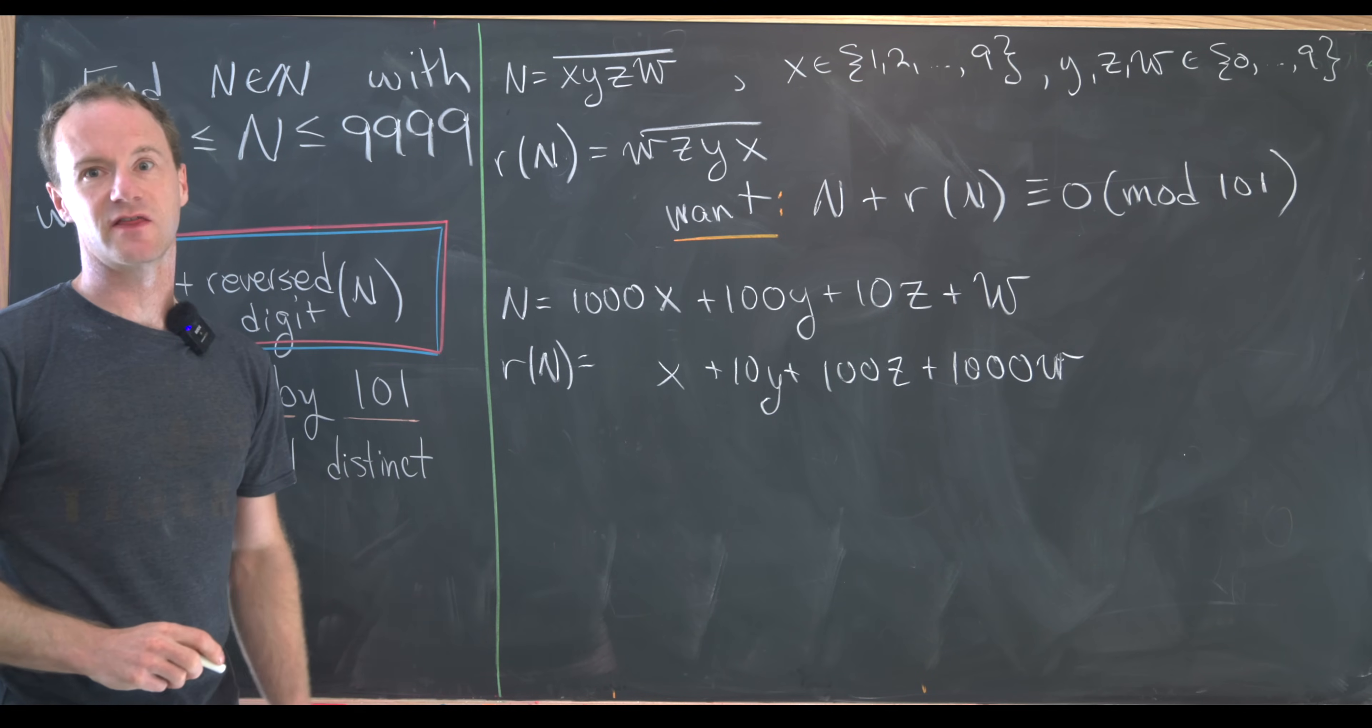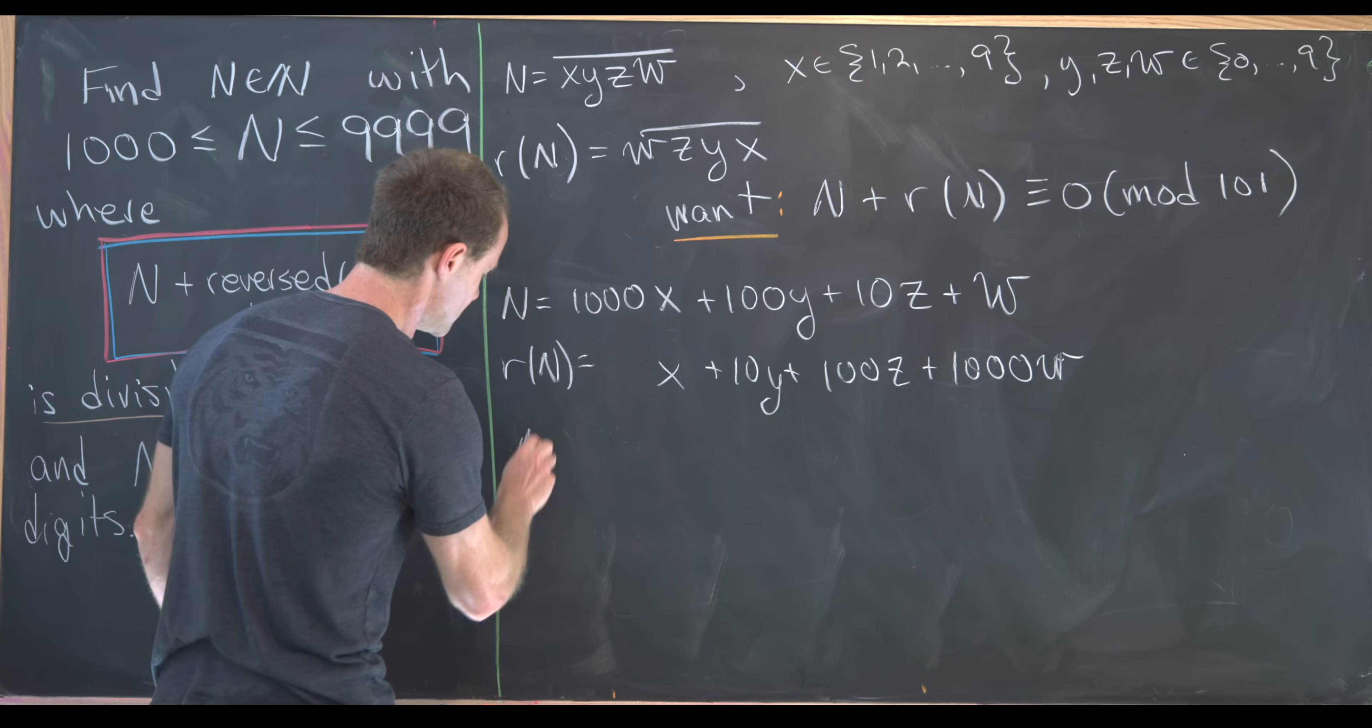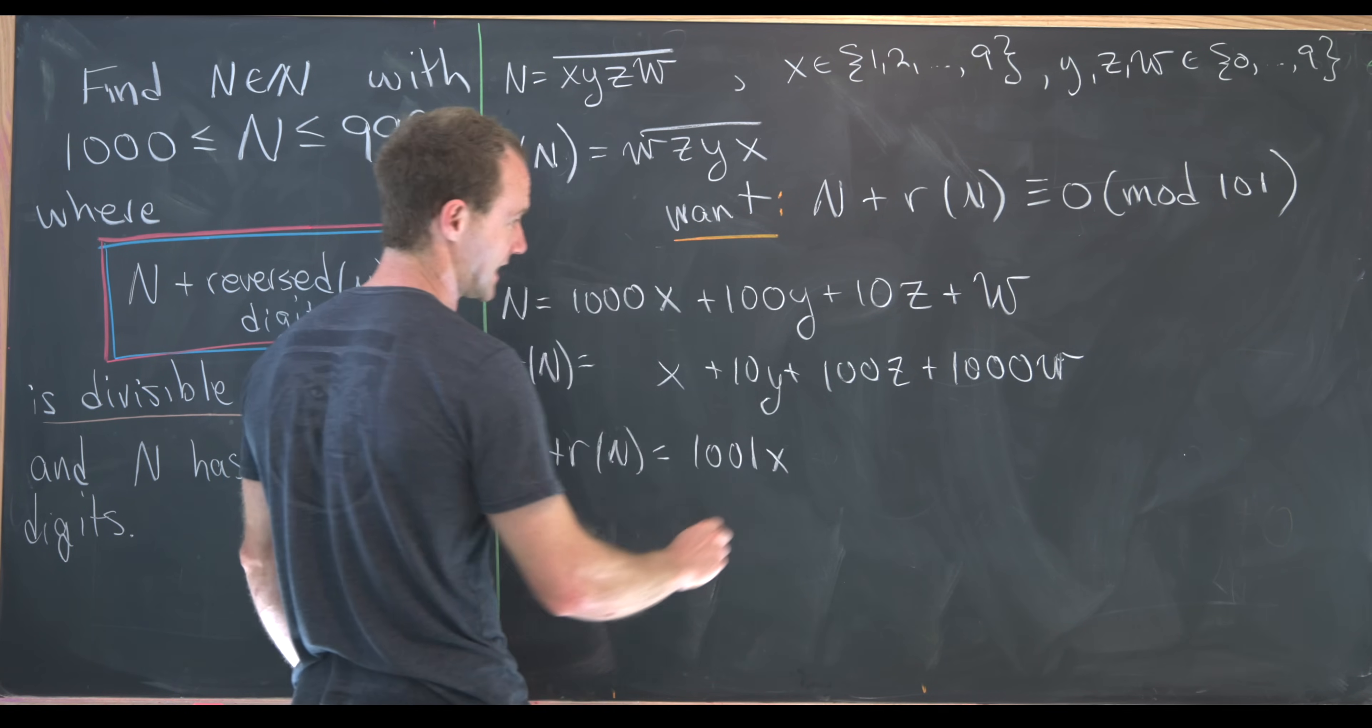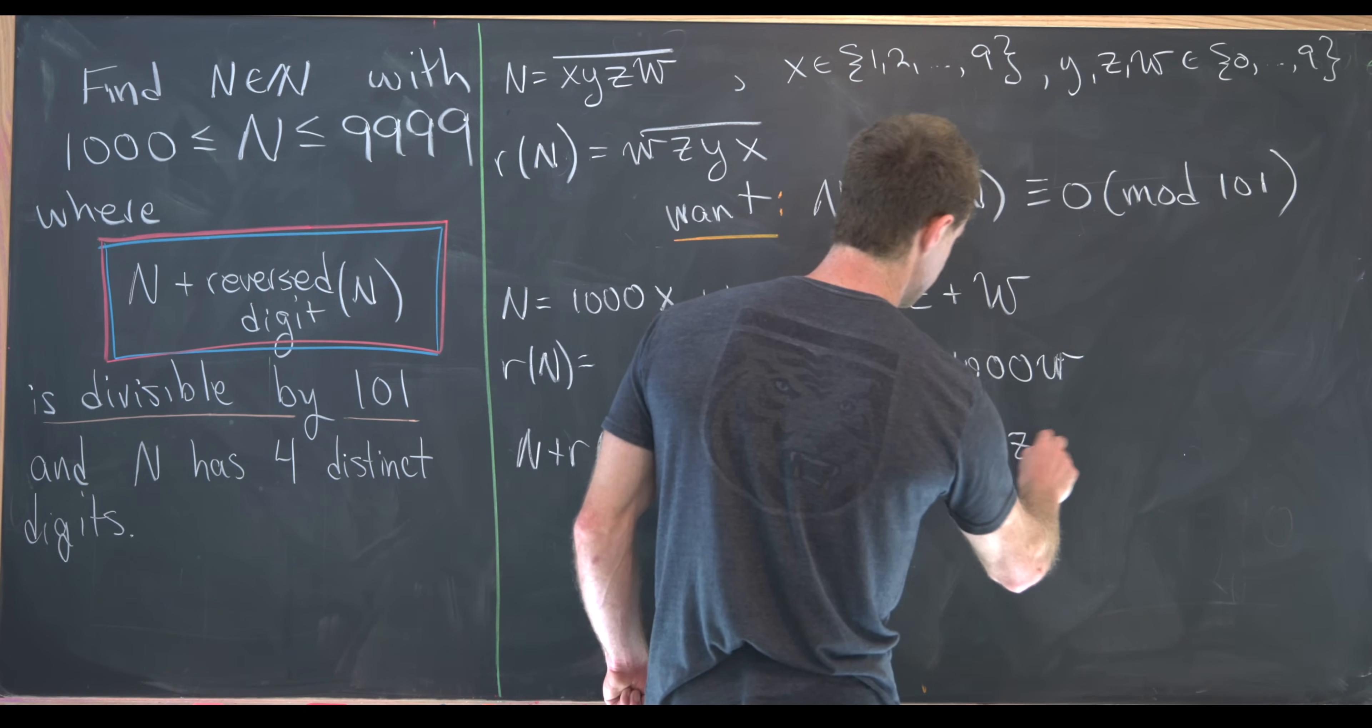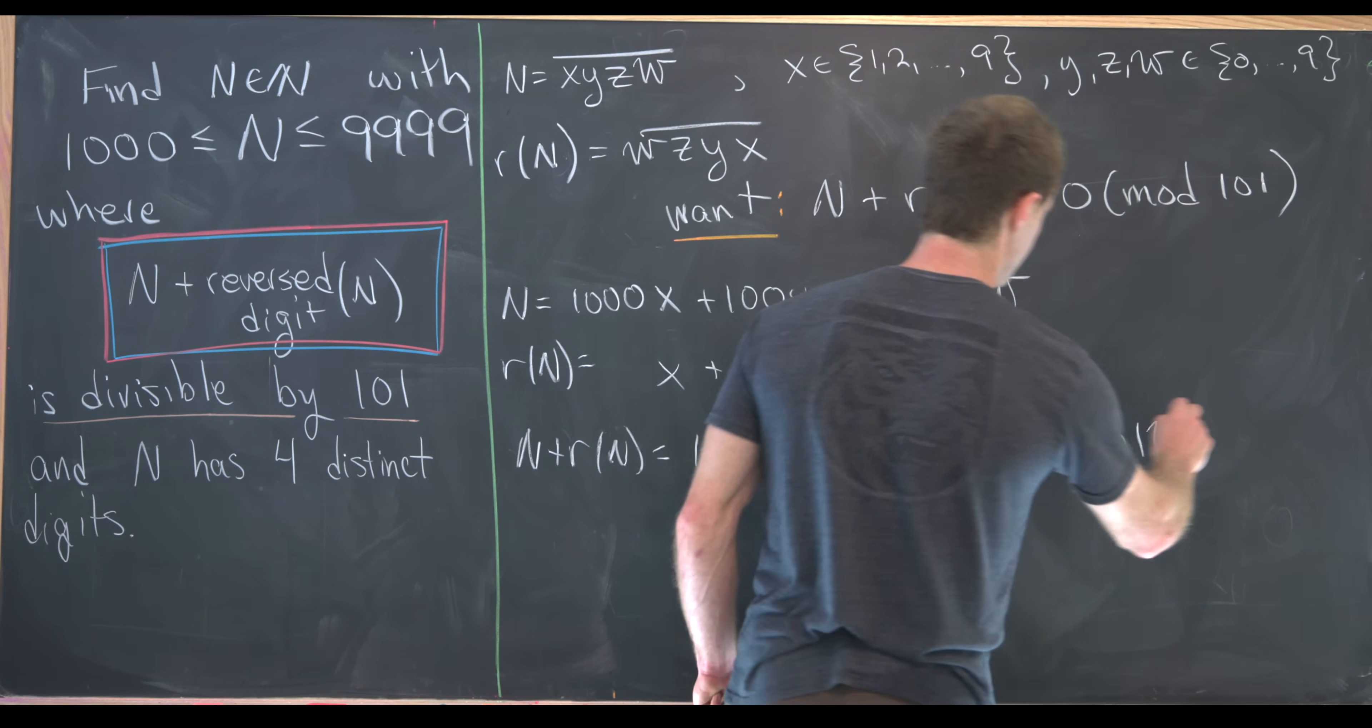So that's going to give us 1,000 W plus 100 Z plus 10 Y plus X. And I did that because now we can take the sum of N and reverse digit of N pretty easily. So notice the N plus R of N is now equal to 1001 X plus 110 Y plus 110 Z plus 1001 W.